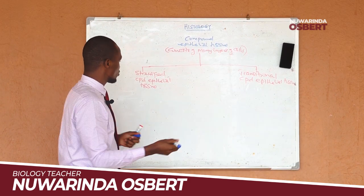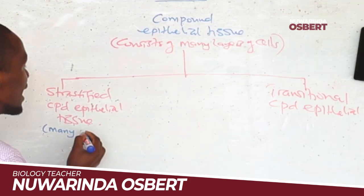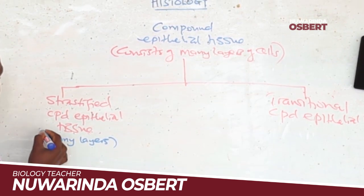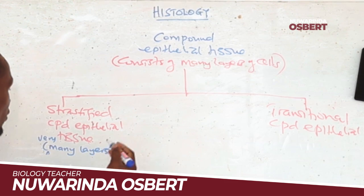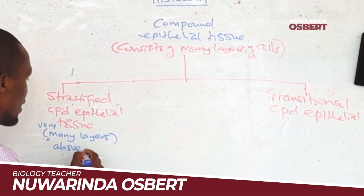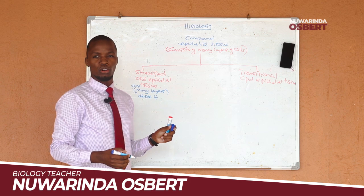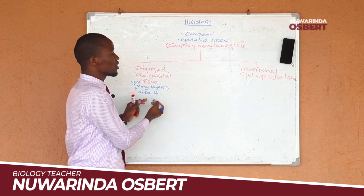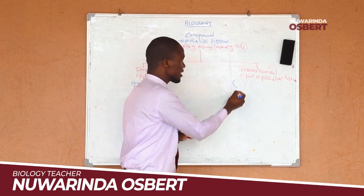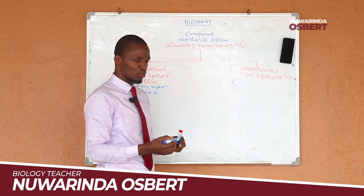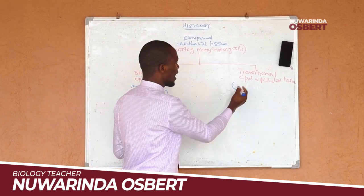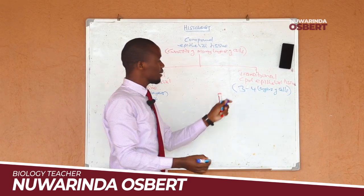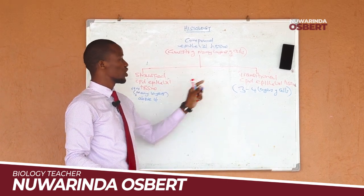The word 'stratified' comes from 'strata,' meaning layers. In stratified epithelial tissue, there are many layers — above four, meaning they can be as many as around twelve layers of cells. For transitional, there are also many layers, but they are fewer — around three to four layers of cells.